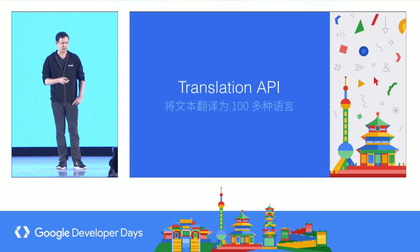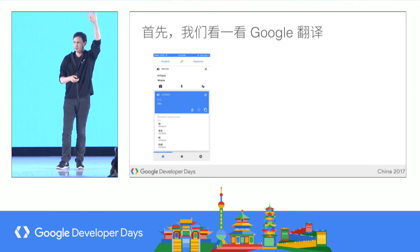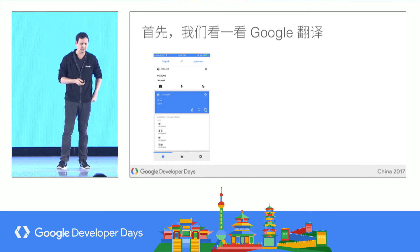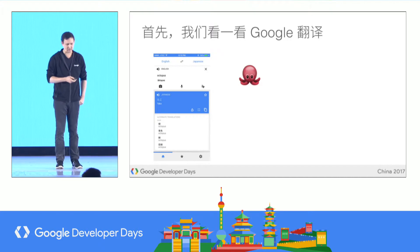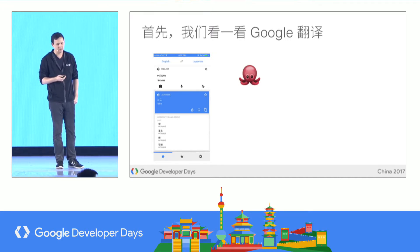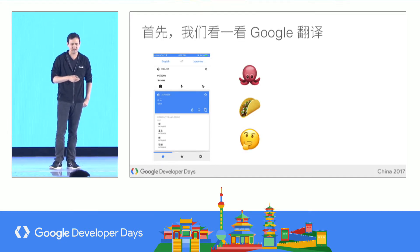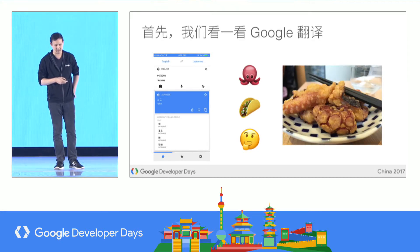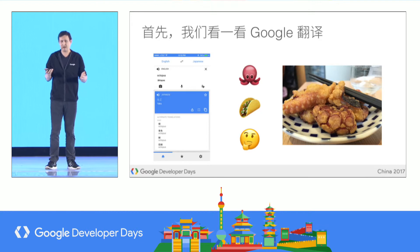Let's get into more information about the Translation API. How many of you have used Google Translate? Virtually all of you. I was in Japan recently — I wanted to order some octopus. It turns out the word for octopus in Japanese is 'tako,' which got confusing for me as an English speaker, where a taco is a tortilla filled with meat or vegetables from Mexican cuisine. But it worked okay, and I was able to successfully complete the order by showing this to the server in the restaurant and got my fried octopus.